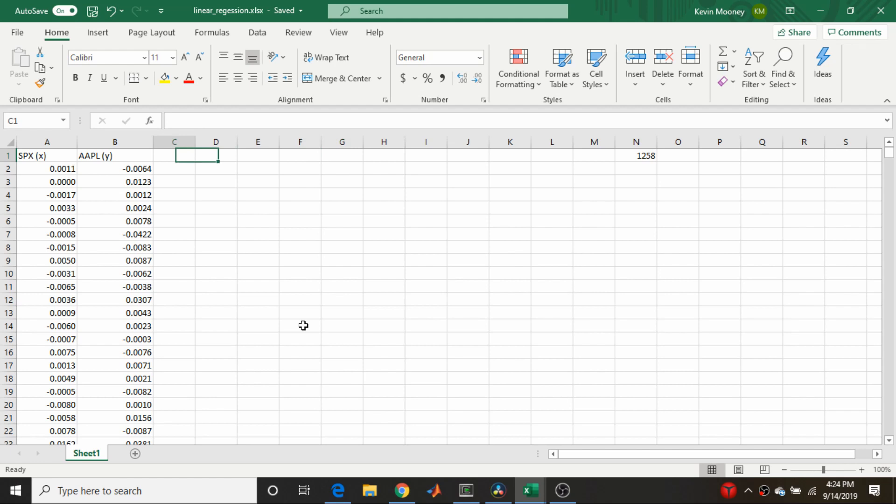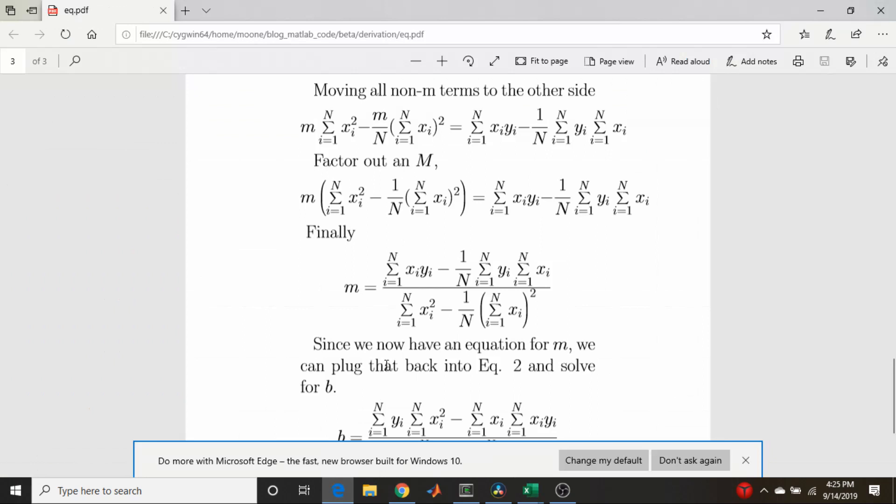So here I've opened Excel and I've already imported the data from the last video, the linear regression data. These are the percent changes of SPX and Apple. And these are going to be our x and y values in that equation for m. So here we go. Here's our equation for m.